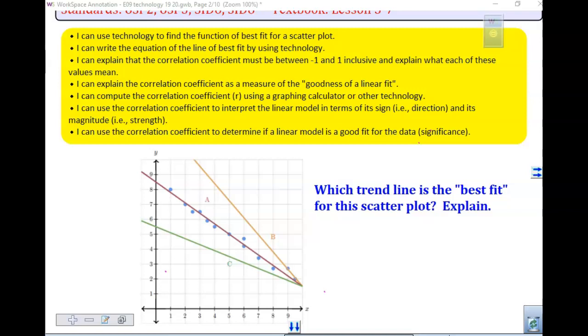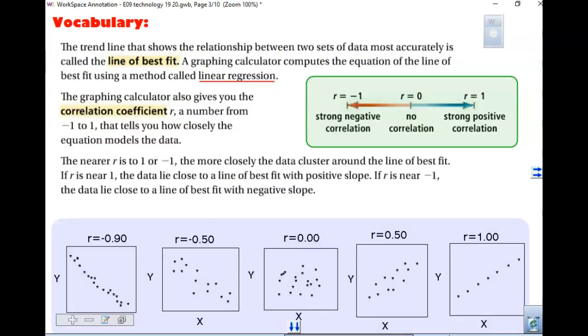I'm going to show you when we put it in the Desmos calculator how you can change the scale as you are looking at things. That next page down in your notes, the trend that shows a relationship between two sets of data most accurately is called our line of best fit. A graphing calculator, in this case the Desmos calculator, will compute an equation for a line of best fit using a method called linear regression.